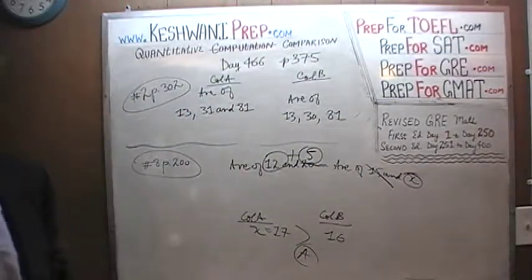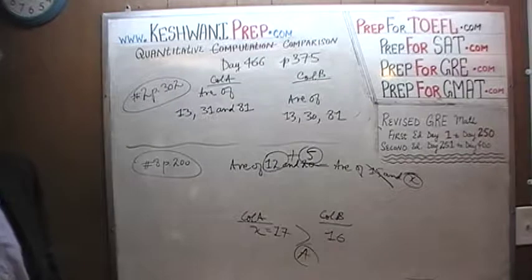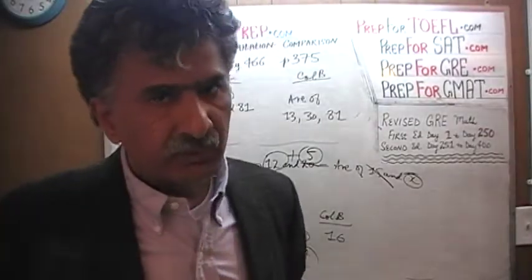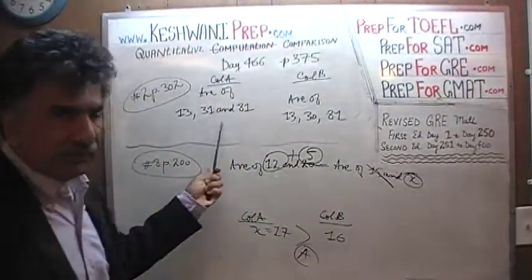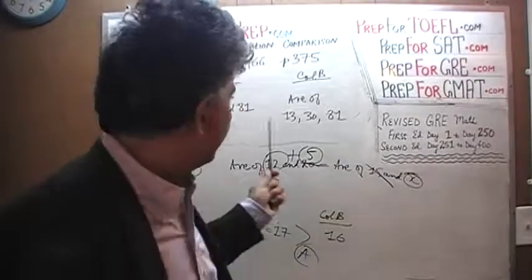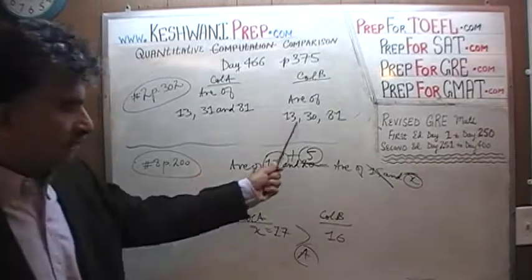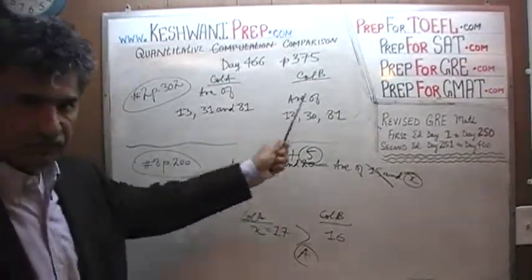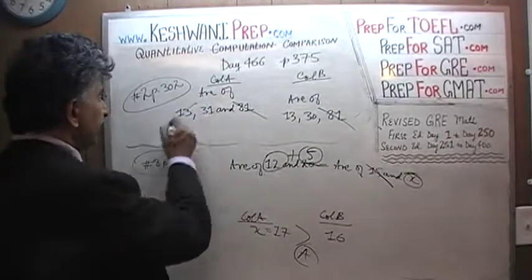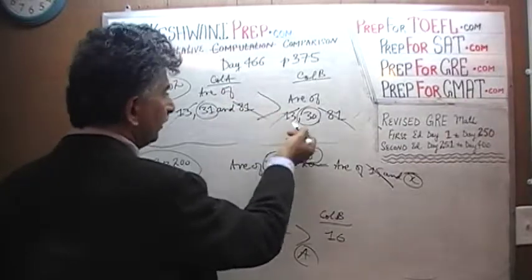Now what can we do? Do it yourself — compare the two quantities, don't compute them. Here we go: 13 appears in both, and importantly, they have the same number of numbers. If the count of numbers is the same on both sides, the sums must be equal for the averages to be equal. We see 81 in both — subtract 81, it plays no role. We see 13 in both — subtract 13, it plays no role. Here we have 31 and here we have 30, which means the average of the first group is going to be more than the average of the second group. The answer is A.